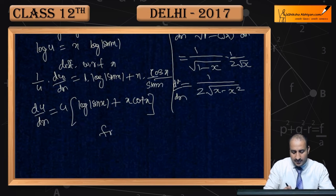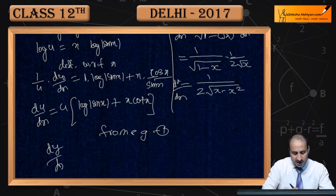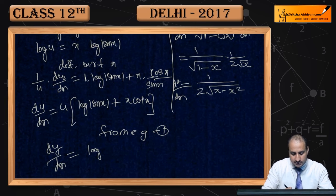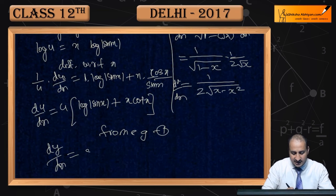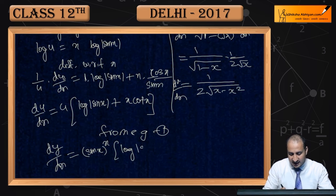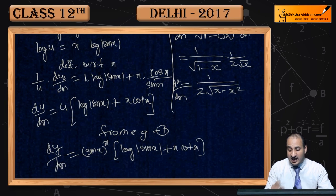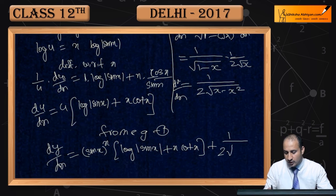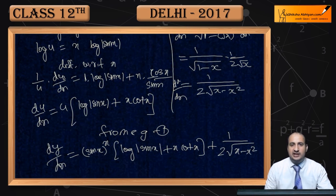Ab from equation 1, dy/dx kya ho jayega: du/dx = sin(x)^x · (log(sin x) + x·cot x), plus dv/dx = 1 / (2√(x − x²)). Yeh aapki final differentiation ho gayi jo aapko batani thi.